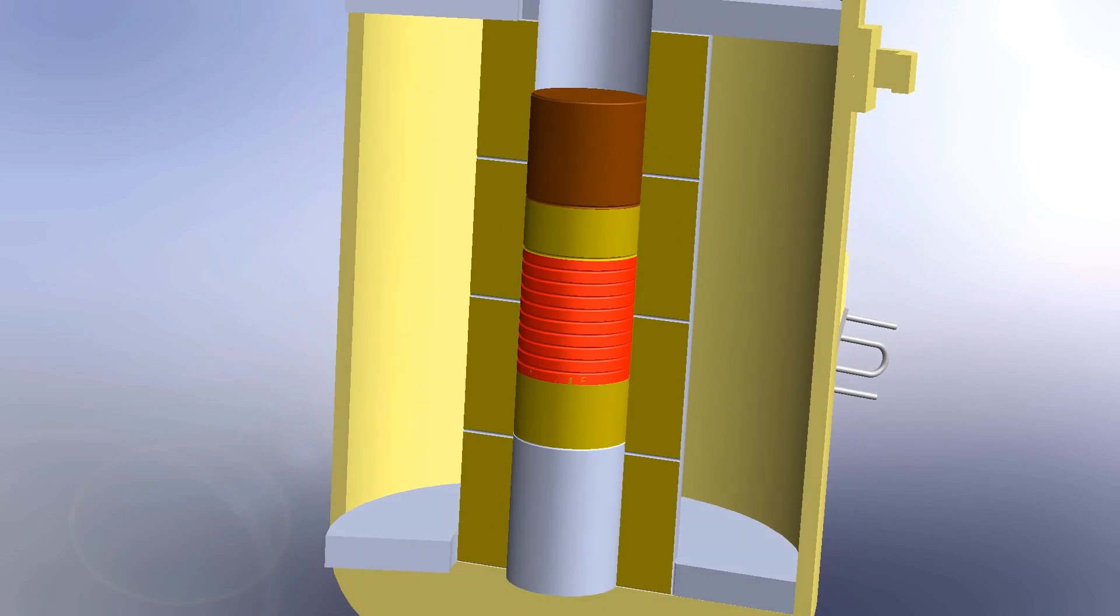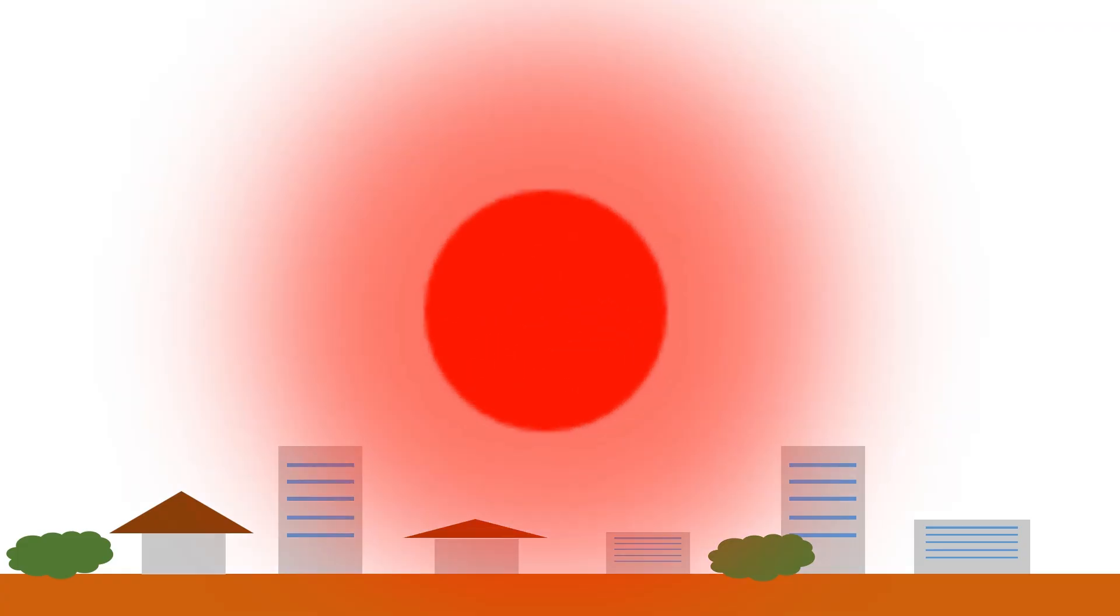The tungsten carbide tamper surrounding the uranium acts as a reflector to prevent neutrons escape and enhance supercriticality. Finally, the chain reaction is activated and causes a tremendous nuclear explosion.